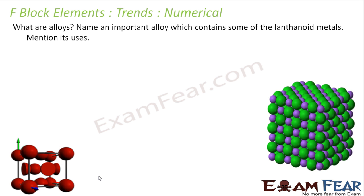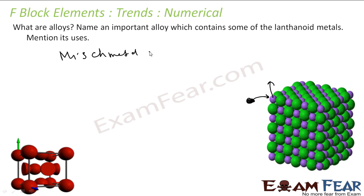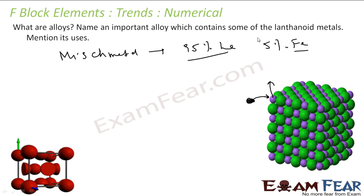What are alloys? An alloy is a homogeneous solution of two or more metals in which the metallic radii are of comparable size, so one metal replaces the other. An important alloy of lanthanides is misch metal, which contains 95% lanthanides and 5% iron, with traces of sulfur, carbon, and silicon. It is used to make bullets, tanks for military use, and gas lighters.